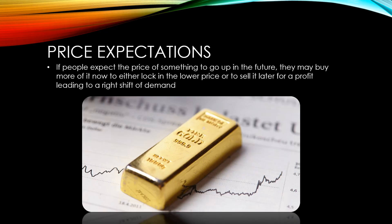If people expect the price of a product to go up in the future, they may buy more of it now to lock in the lower price, or perhaps to sell it later for a profit when the price does go up — both of these would lead to a right shift of demand right now. If the price of a product is expected to go down, consumers may wait before buying it, and that would lead to a left shift of demand right now.